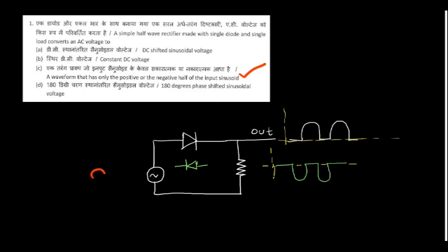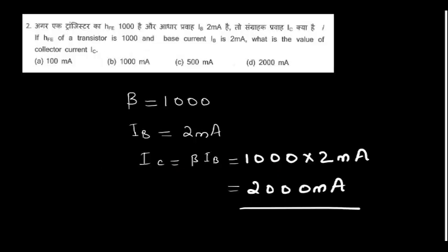Because the input is a sinusoidal wave, the output you will get is either the positive half or negative half depending upon the diode direction.